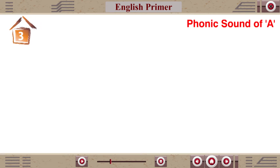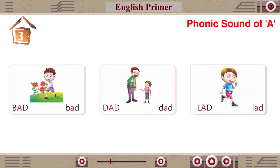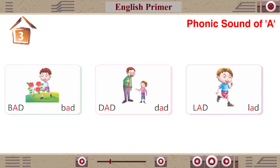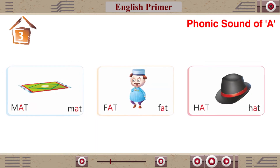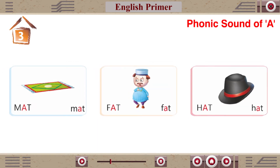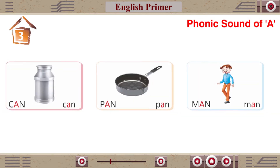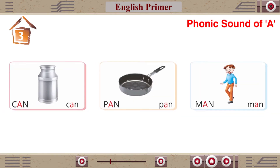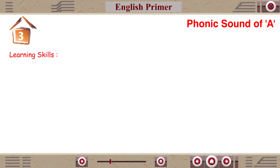Chapter 3: Phonic sound of A. Bad, Dad, Lad, Man, Fat, Hat, Can, Pan, Man.